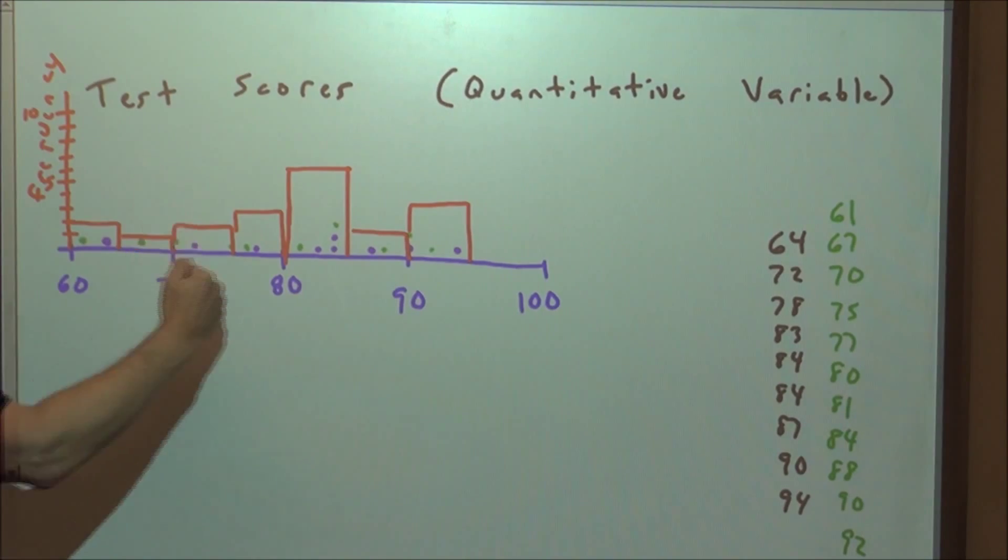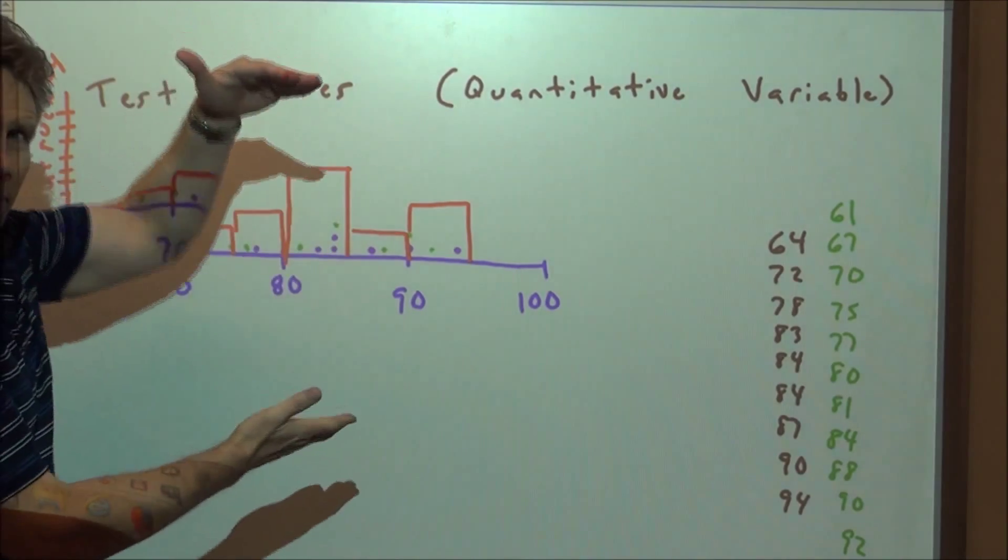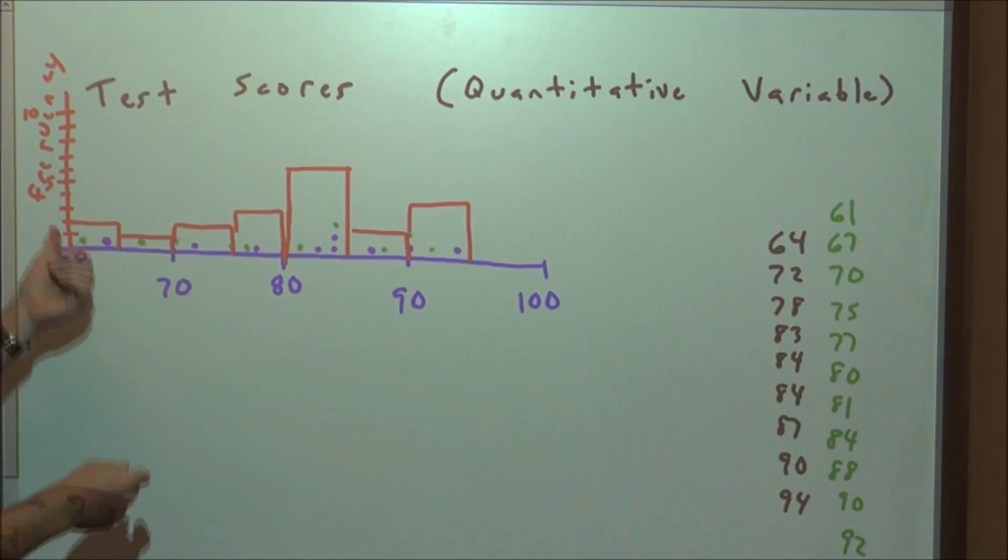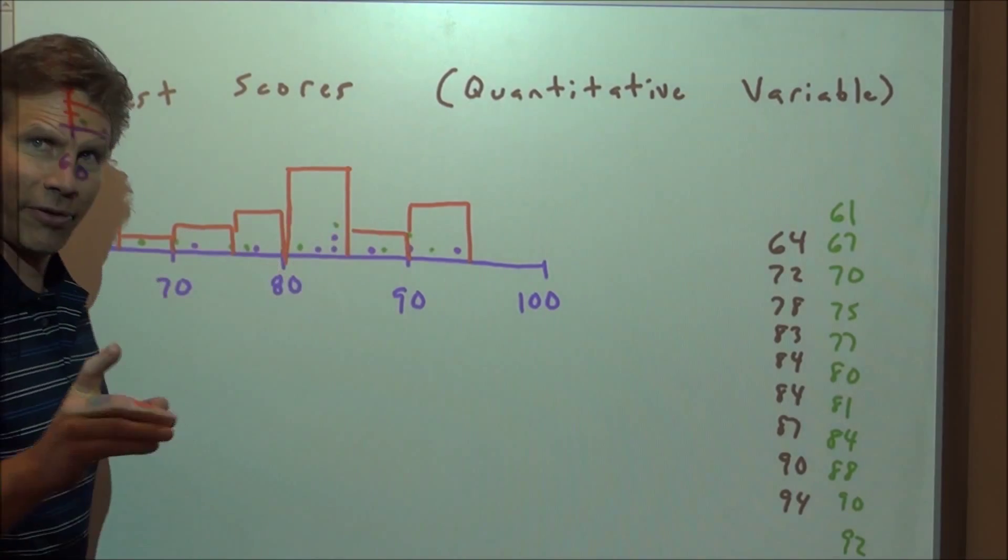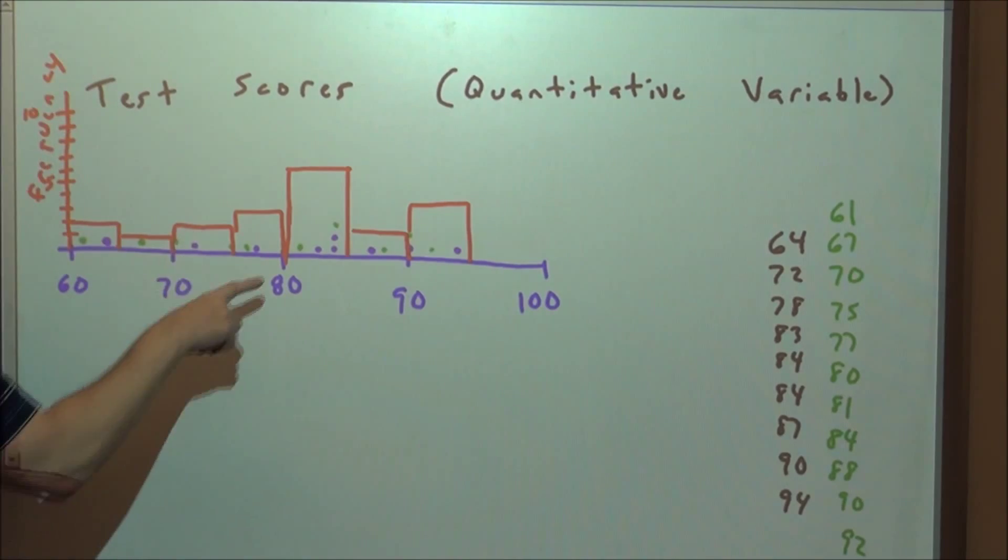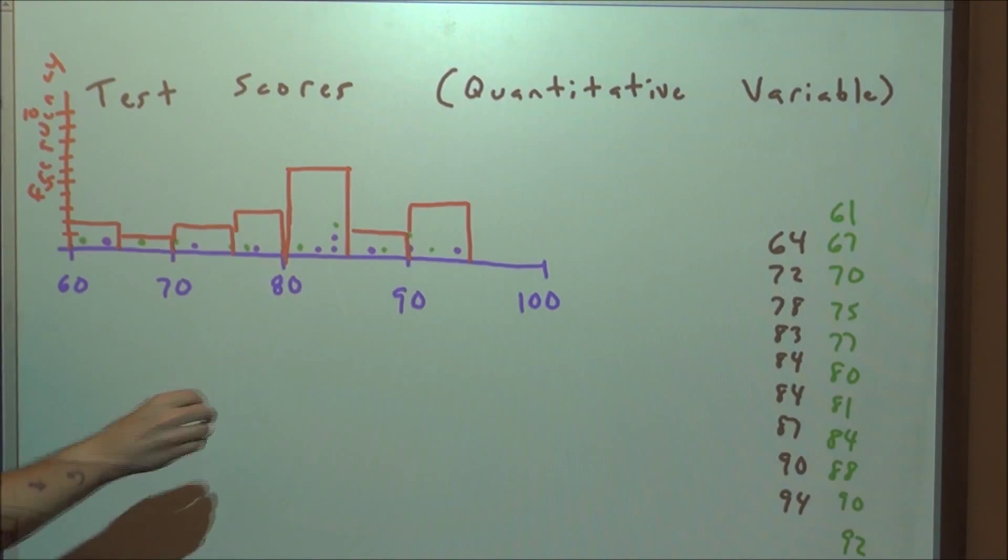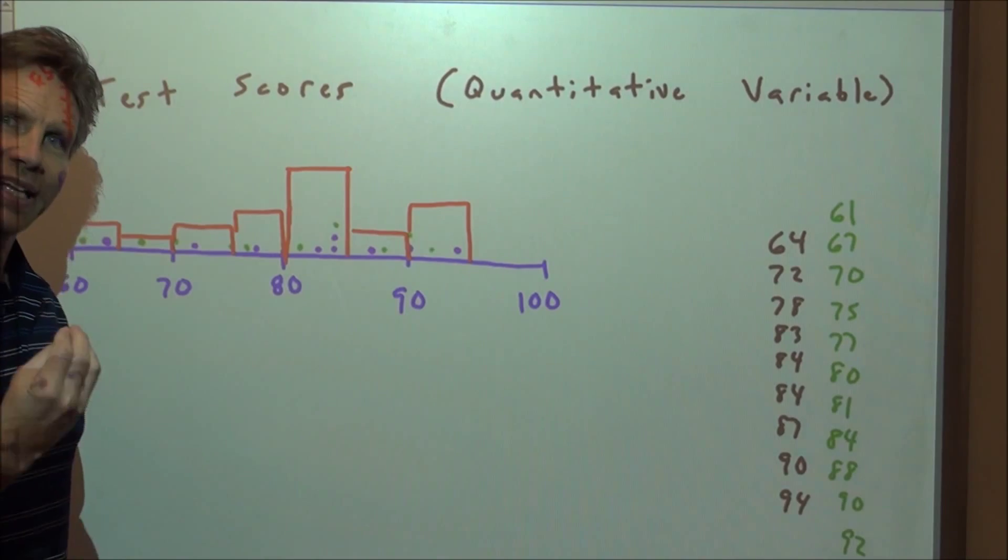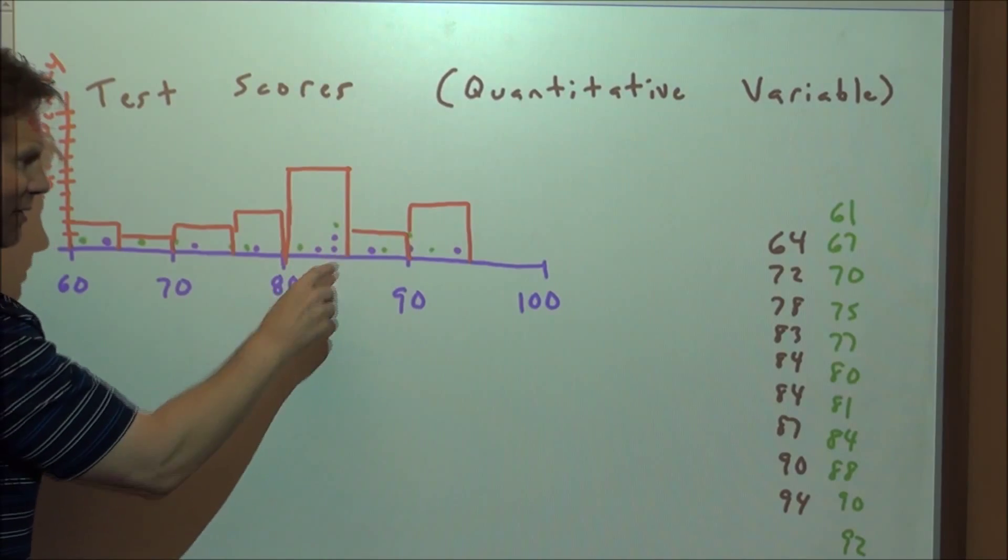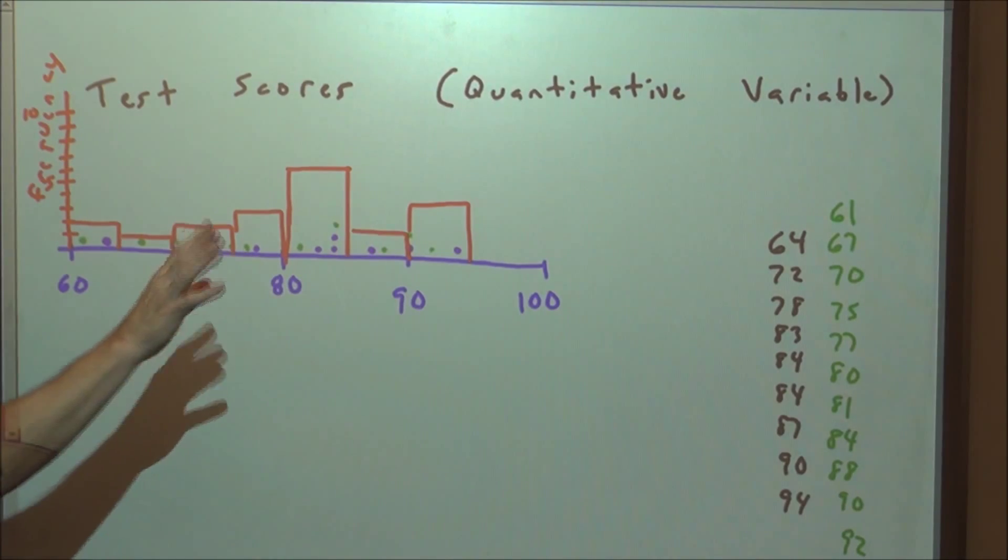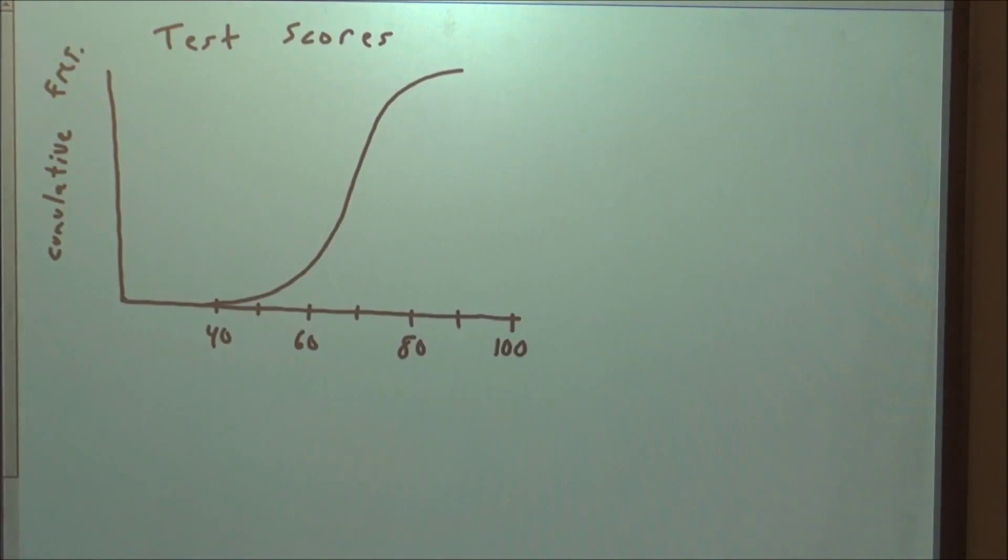So we can make these histograms, and the height of the bar in the histogram tells us the frequency, the total number of scores that are in that interval. And by the way, if an interval begins at 80 and you have a score that's exactly at 80, it goes in this interval right here, 80 and above, not in the interval below. So keep that in mind.